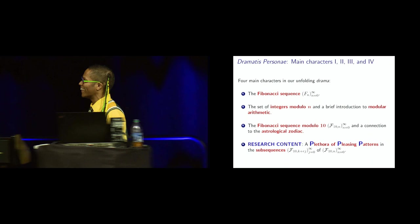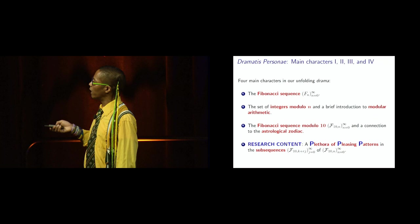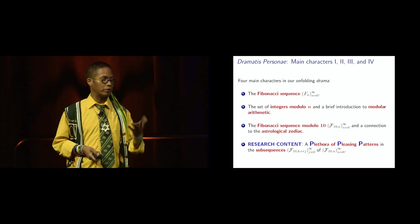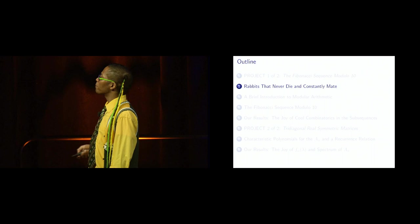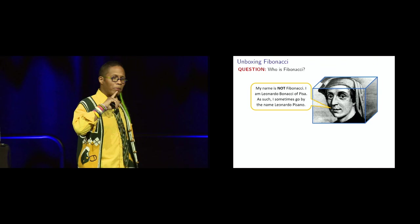I'm going to give an alliteration here, a plethora of pleasing patterns in these sub-sequences of the following form. F sub 10, comma K plus Rj, J going from zero to infinity, sub-sequences of our apparent sequence of the modulo 10 Fibonacci sequence. Okay, let's start. Rabbits that never die and constantly mate. This is important. So, let's unbox Fibonacci.